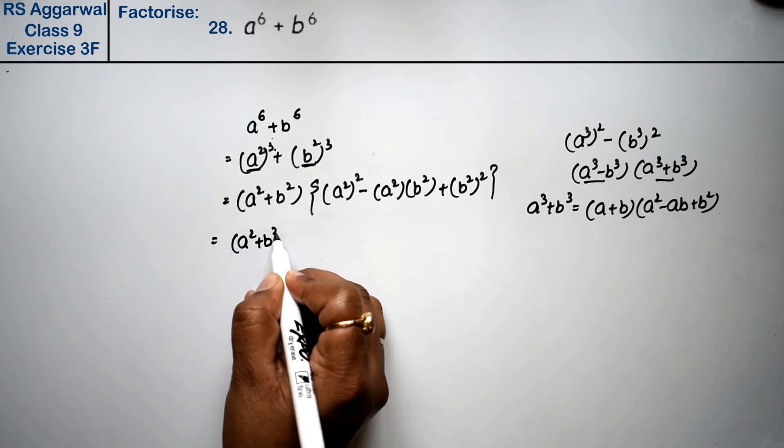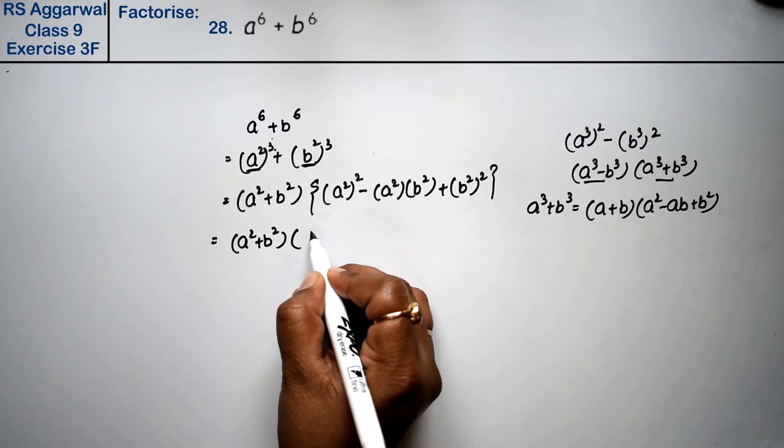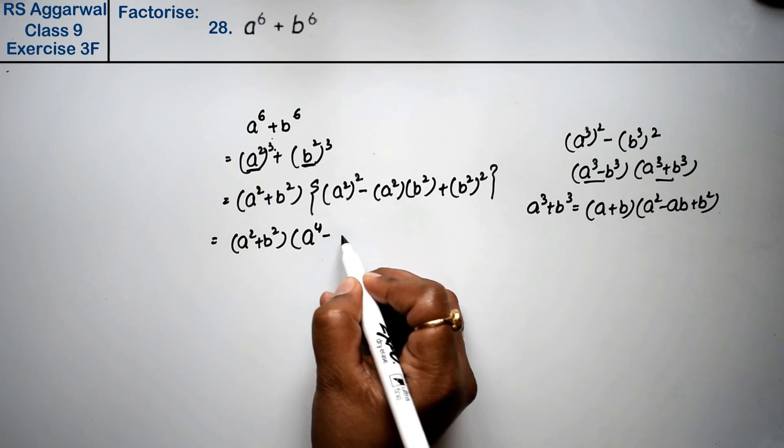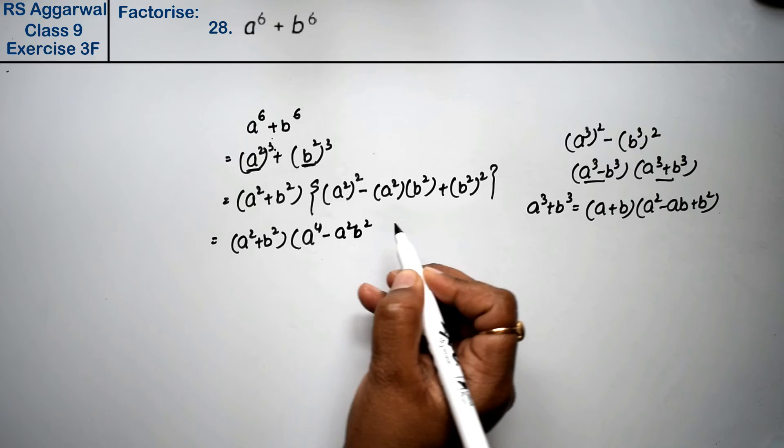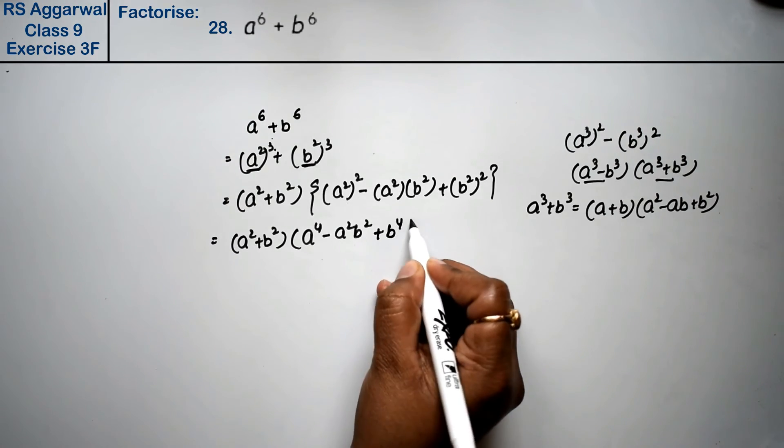So the factored form (a^2 plus b^2)(a^4 minus a^2b^2 plus b^4) is the answer.